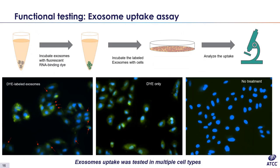We wanted to see if our purified exosomes could be taken up by recipient cell lines. We performed this uptake assay on multiple cell types, including cancer cells and astrocytes. A549 exosomes were labeled with an RNA-binding dye (green fluorescence) and added to recipient A549 cells. After four hours of incubation, cells were fixed and stained with DAPI. Image A depicts dye-labeled exosomes added to the cells. Image B shows only dye added to cells. Image C shows cells without any dye or labeled exosome. Exosomes were successfully taken up by the cells and accumulated in the cytoplasm, suggesting that ATCC exosomes are intact and are easily taken up by cells.